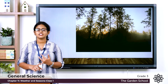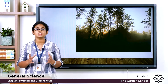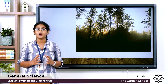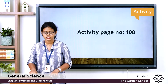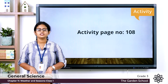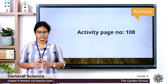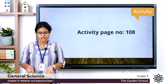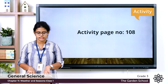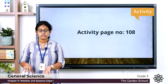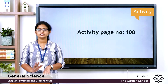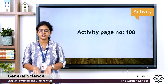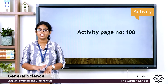The weather changes very frequently; it does not remain the same throughout. It changes from day to day and time to time. In page number 108 there is an activity for you: a wind direction finder. For this activity you need a broomstick about 15 centimeters long, a pencil with an eraser, a pin, a bottle, some sand or soil, and thick paper. You can try doing this activity.